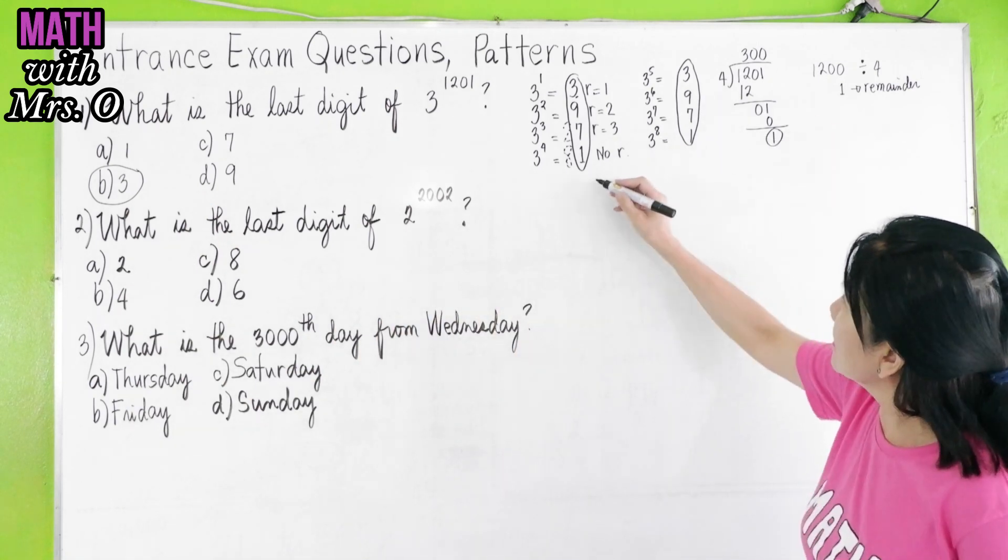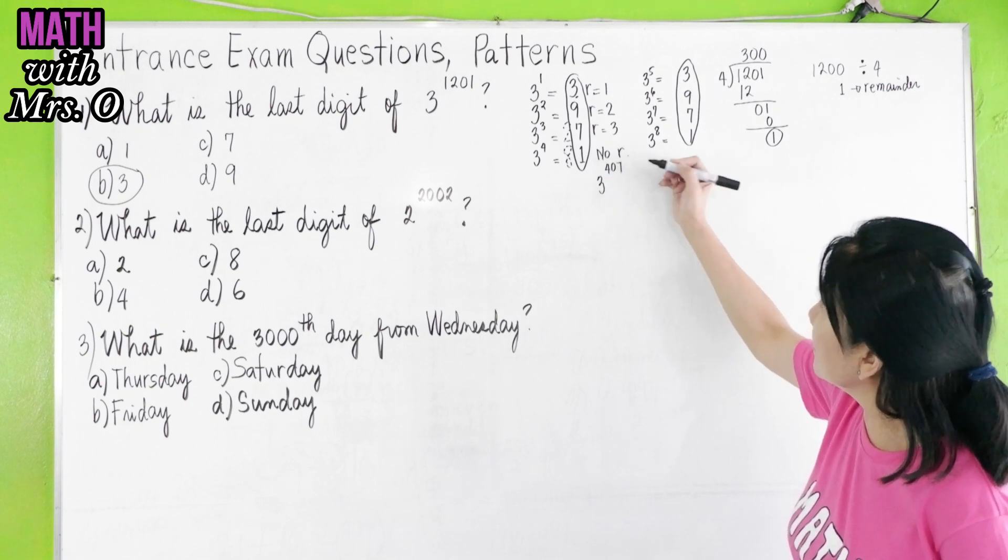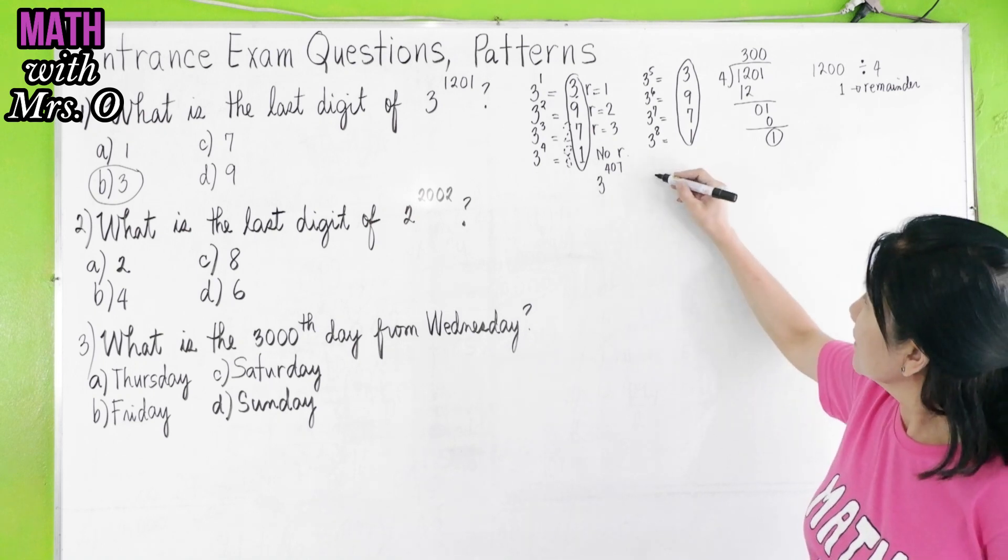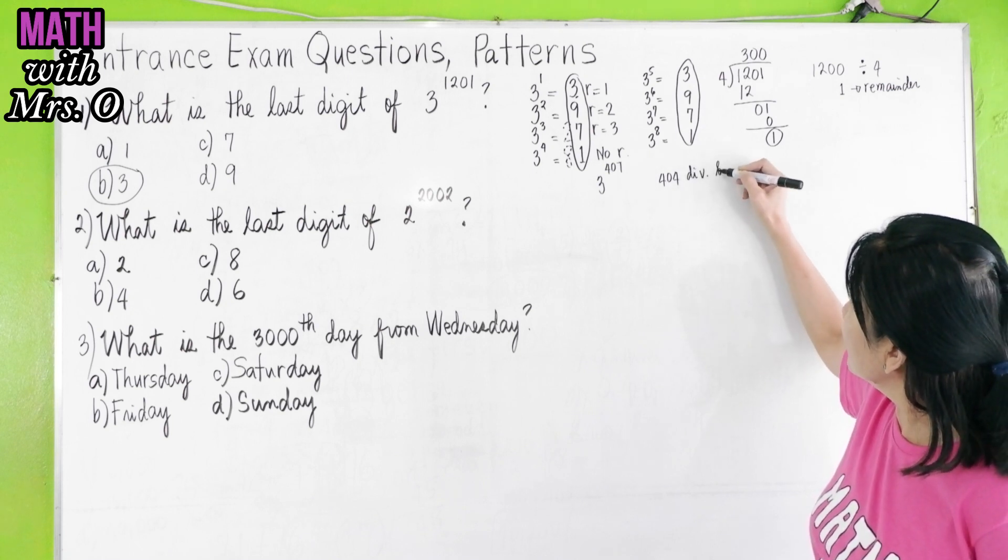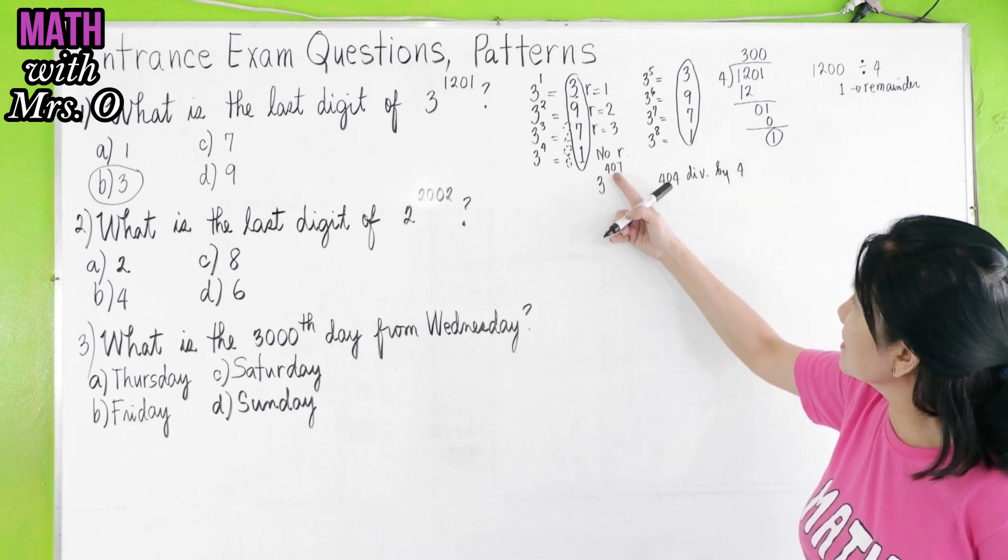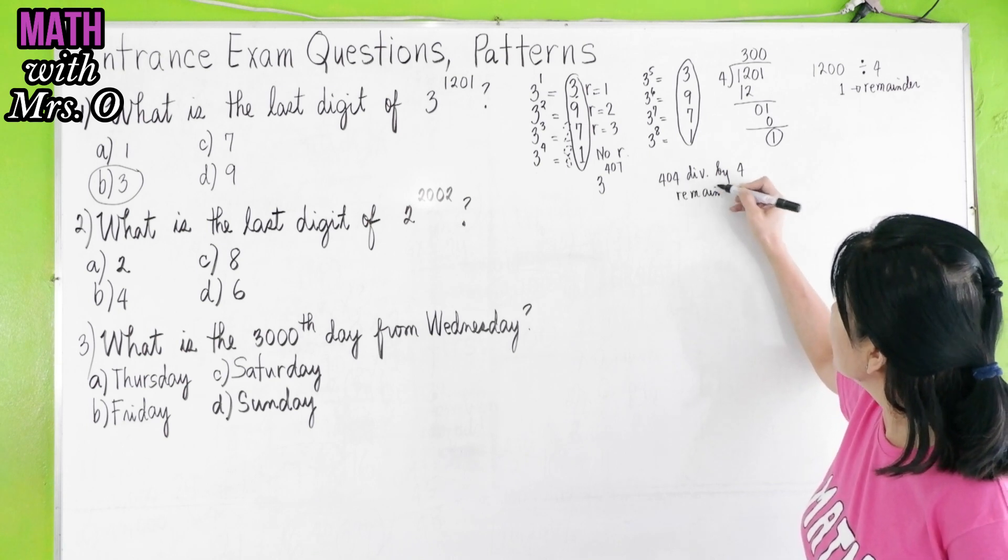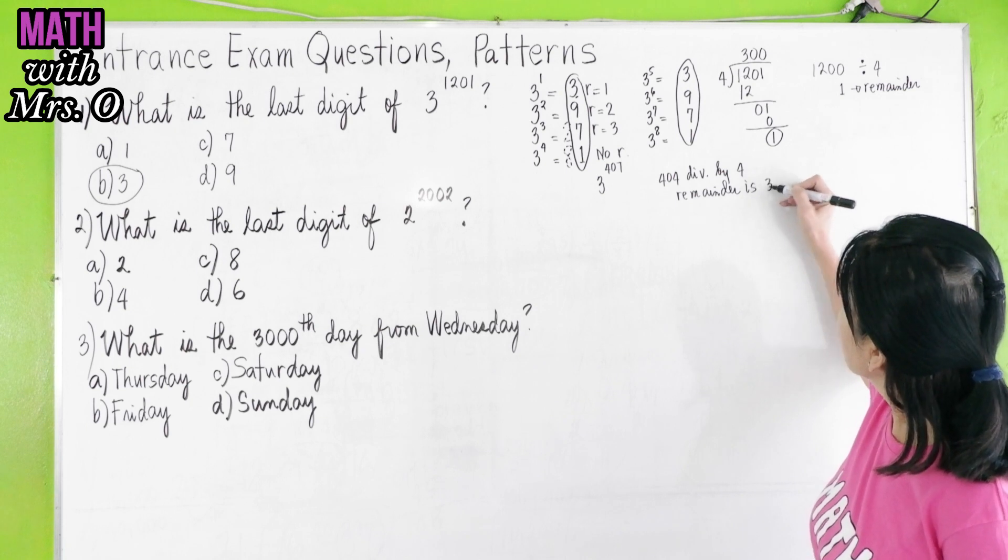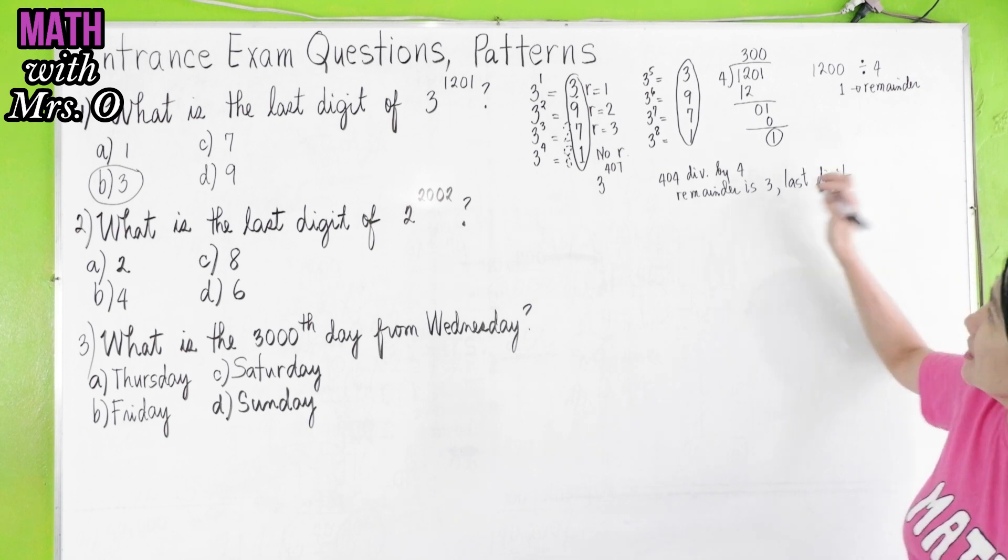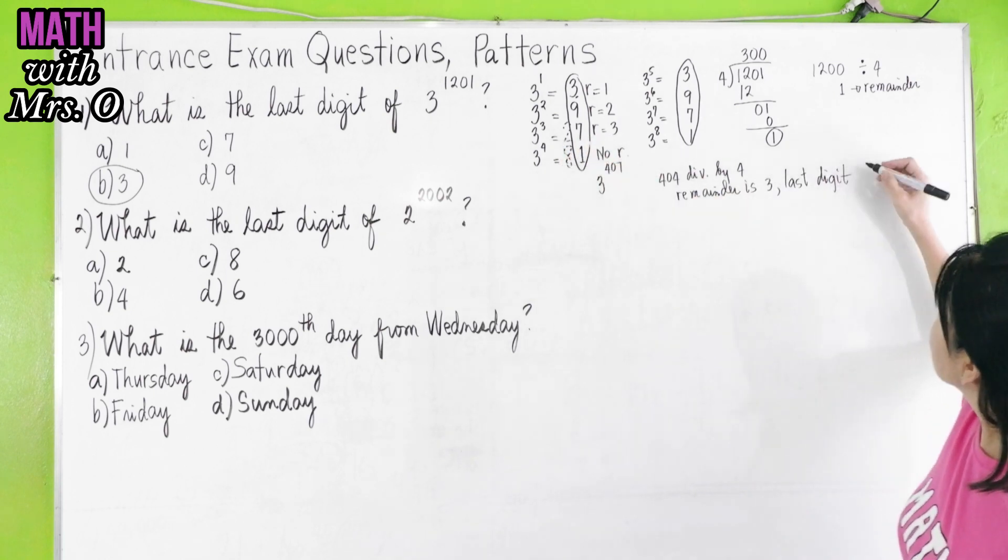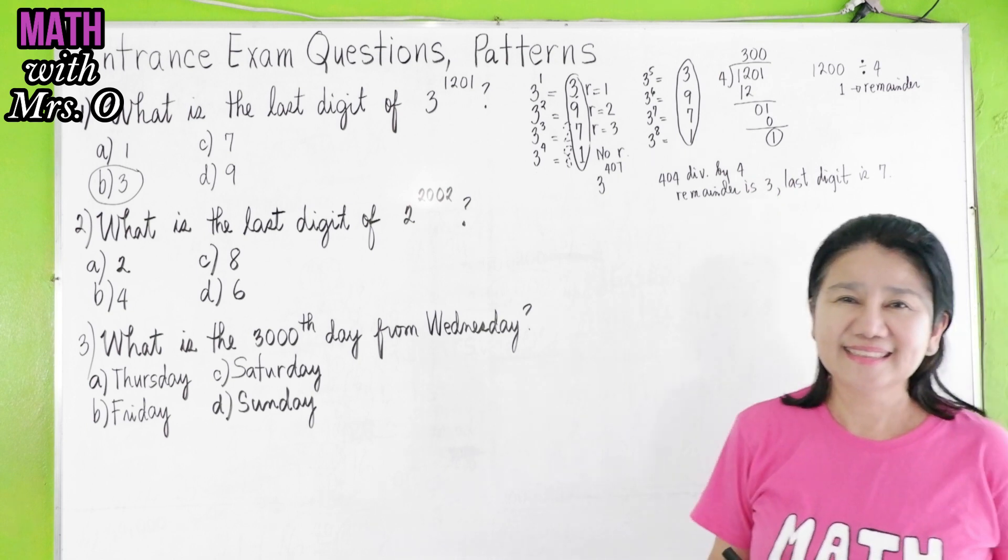Let us say we have here 3 to the 407. What does that mean? 404 is divisible by 4, so 407 minus 404 is 3. Your remainder is 3. Therefore, your last digit when the remainder is 3 is 7. You can use divisibility by 4.